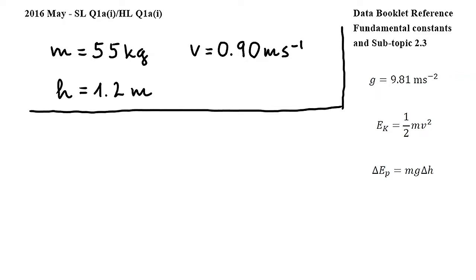In this question, we have to show that the elastic energy stored in a spring is 670 newtons. At point C, the ice block has a speed of 0.9 meters per second, and it's at a height of 1.2 meters.